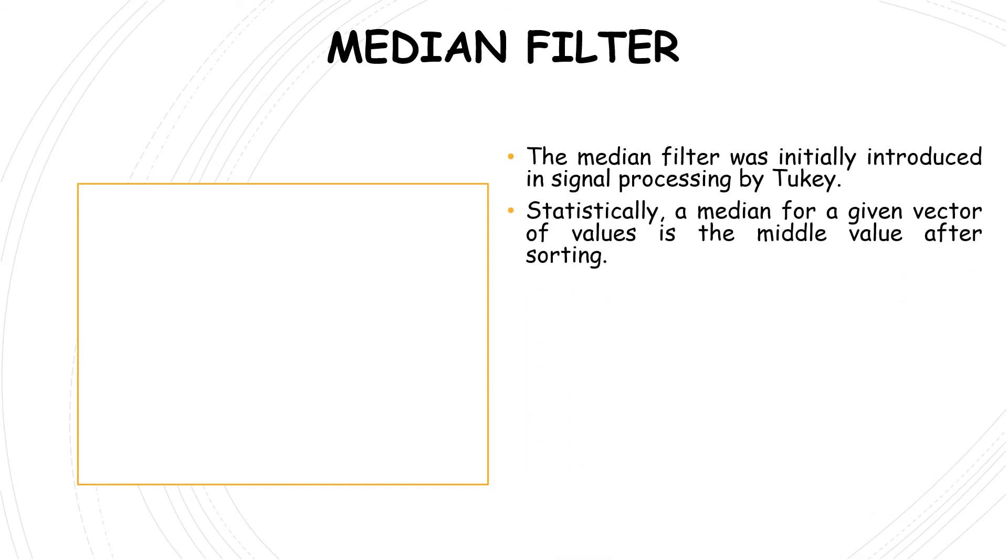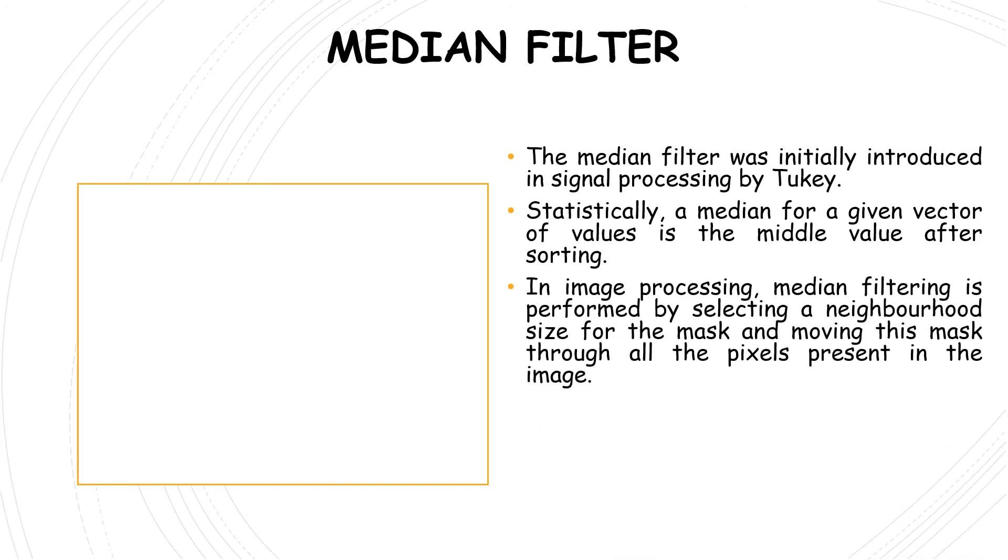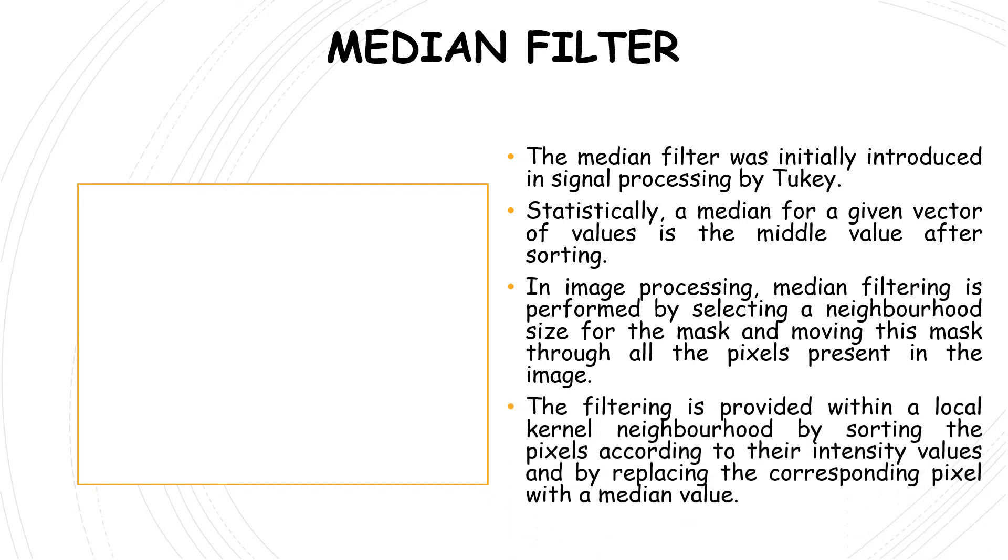The median filter was initially introduced in signal processing by Tukey. Statistically, a median for a given vector of values is the middle value after sorting. In image processing, median filtering is performed by selecting a neighborhood size for the mask and moving this mask through all the pixels in an image. The filtering is provided within a local kernel neighborhood by sorting the pixels according to their intensity values and replacing the corresponding pixel with the median value.